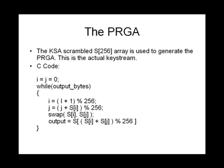The PRGA algorithm steps are: i = (i + 1) % 256, j = (j + S[i]) % 256, then swap S[i] and S[j], and finally output S[(S[i] + S[j]) % 256]. The programming construct is very simple, though from this alone it's hard to see why this scrambles the array or what the cryptographic strength is.